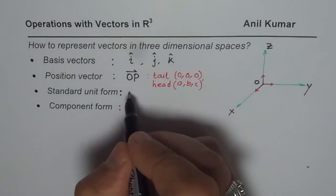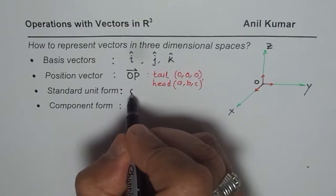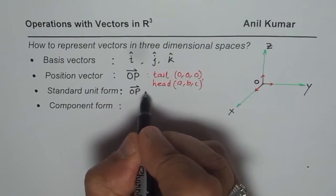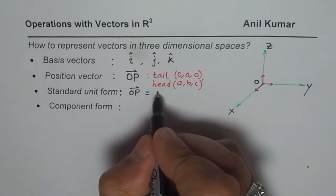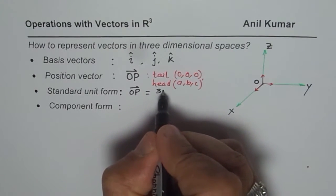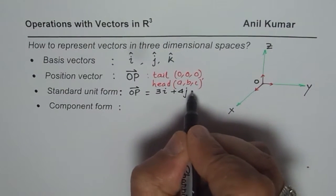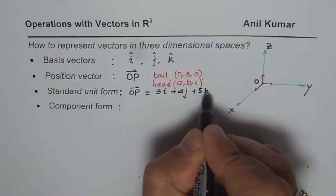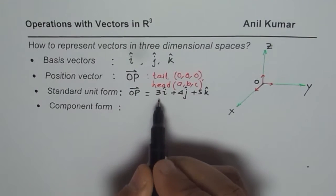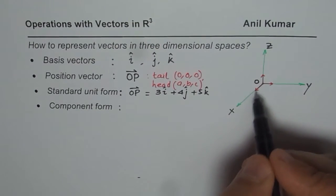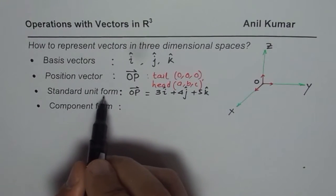Let me tell you what is standard unit form and what is component form. If I write a vector, let's say we write OP. I could write OP as, let me give you some numbers this time. Let's say 3i plus 4j plus 5k. This is standard unit form.